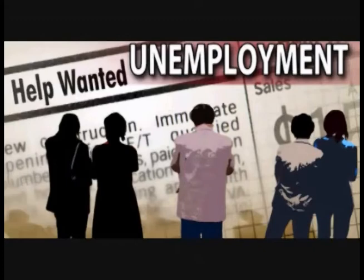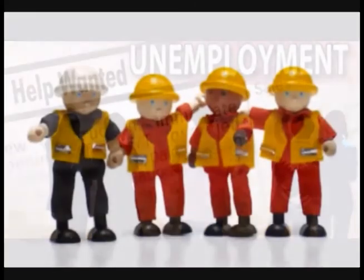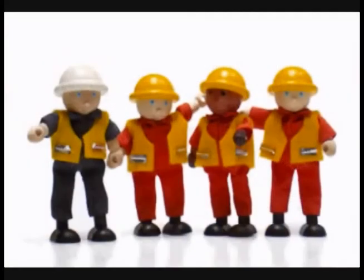Structural unemployment happens when unemployed workers are unable to fill job openings due to skill mismatch or geographical mismatch. Structural unemployment due to skill mismatch occurs when available workers do not have the skills needed to perform available jobs. Structural unemployment also occurs when people have jobs for part of the year but are unemployed part of the year due to seasonal factors — for example, construction or farm workers who are out of work because of cold weather.